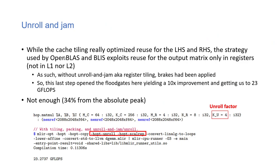The unroll-and-jam transform can also be used in combination with tiling and packing to exploit register reuse. OpenBLAS and BLIS reuse the output matrix only in registers, which follows the memory hierarchy principle: the data you access most frequently should be in the fastest, most accessible memory. In matrix multiplication, the accumulator is accessed most frequently, and you want it in registers, which are fastest but smallest in capacity.